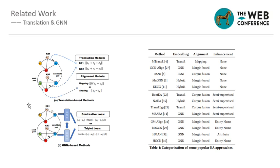Existing entity alignment methods can be divided into two main categories. The first one is translation-based. This method uses translation-based knowledge graph embedding models, such as TransE, on every single knowledge graph to get embeddings of entities and relations, and then align entities from two separate spaces into one unified space.